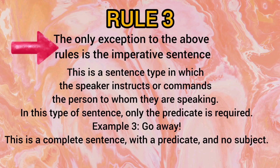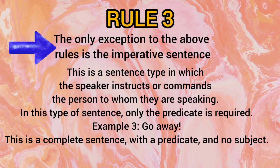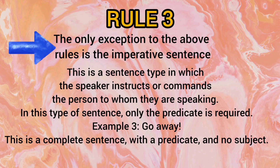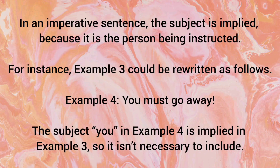Rule number 3: The only exception to the above rules is imperative sentences. These are sentences in which the speaker is commanding or instructing something. For example, 'Go away' is a complete sentence — it has a predicate but no explicit subject. In imperative sentences, the subject is implied because the person is being instructed — for example, 'You must go away.' The 'you' is implied, so it is not necessary to include it.